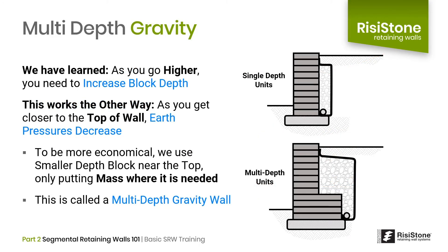We can use SRW units in different ways to create different types of gravity structures. As we go higher with a gravity wall, we must increase the depth of the unit because earth pressure increases with height. However, earth pressure also decreases as you are closer to the top of the wall. Knowing this, we can create a type of gravity wall where we decrease the depth of the block as we get closer to the top, because the pressure in that area is less. This creates a more economical gravity wall, as we are only putting mass where we need it. This type is called a multi-depth SRW.